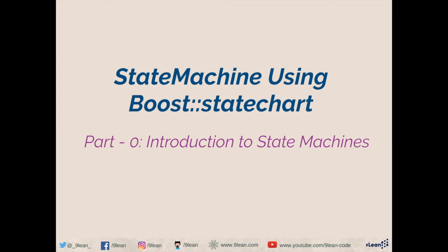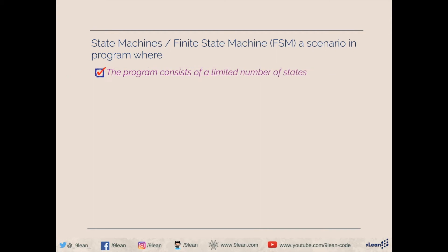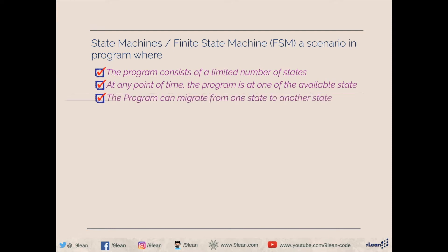Before we go ahead and start the code, let's first understand what state machines are. A state machine, or finite state machine, is a scenario where the program consists of a limited number of states. At any point in time, the program is at one of the available states, and the program can migrate from one state to another.